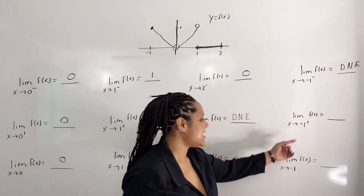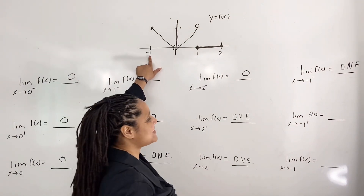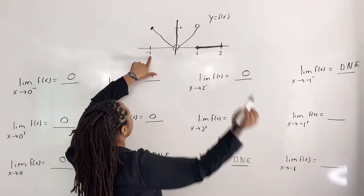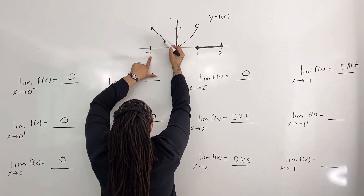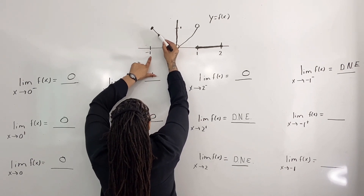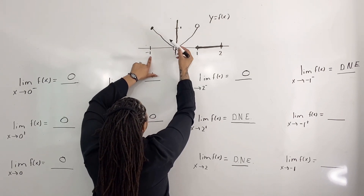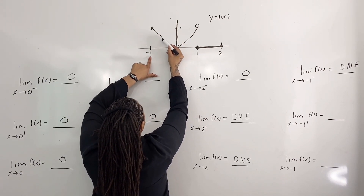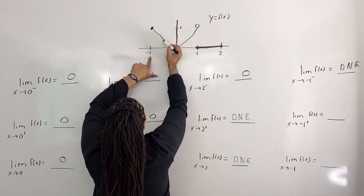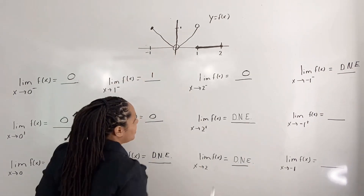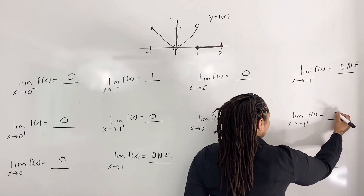Now we evaluate the limit as x approaches negative 1 from the right. I place one hand by x equals negative 1 and the other hand to the right of x equals negative 1, but somewhere on the graph. I then travel the graph from right to left until my hand is almost in vertical alignment with the first hand. We see that as x approaches negative 1 from the right, the y value approaches 1. So the limit as x approaches negative 1 from the right is 1.